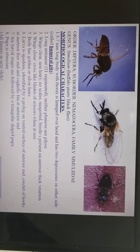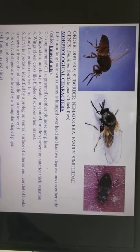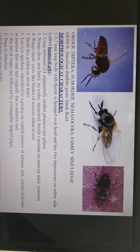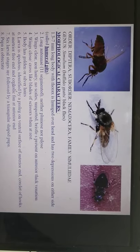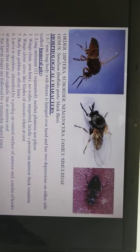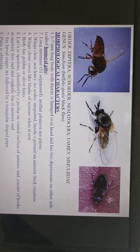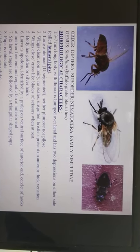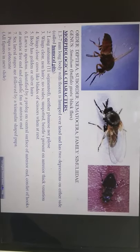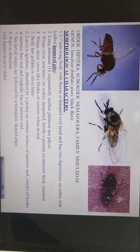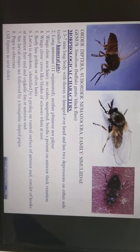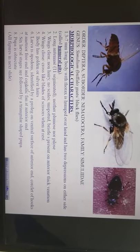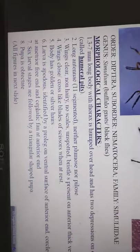The Cyclorhapha are medium in size — not very large like the tabanid flies, and smaller than the Brachycera flies. The antennae in the last or penultimate segment have a feather-like structure called the arista. The venation in the wings is very prominent — you will find very prominent venations, with a few exceptions. Now let's come to the morphological characters.